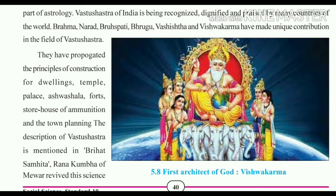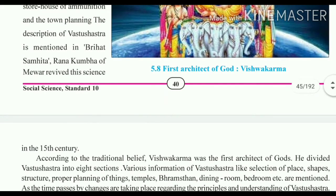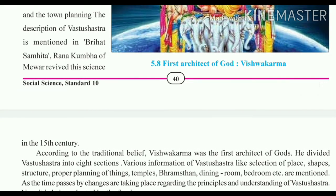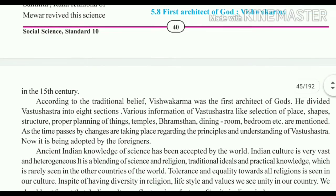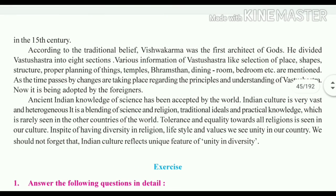The full description of Vastu Shastra is given in Brihat Sahita. Rana Kumbha of Mewar revived this science in the 15th century, when it had somewhat declined. According to traditional belief, Vishwakarma was the first architect of the gods. He divided Vastu Shastra into 8 sections.